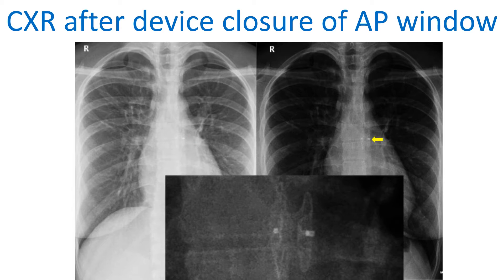The second upper panel shows a darkened image of the X-ray which makes the device a little more prominent. The lower middle panel is a magnified view of the device which clearly shows two discs of the device, with the left disc being smaller than the right one. The shape of the device is suggestive of an Amplatzer device.